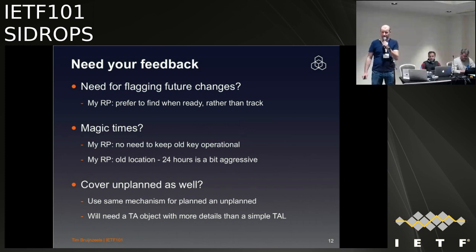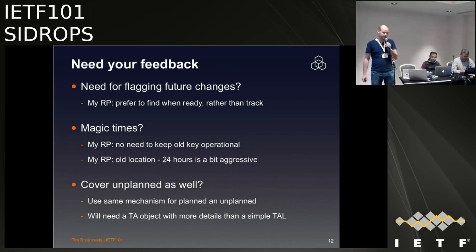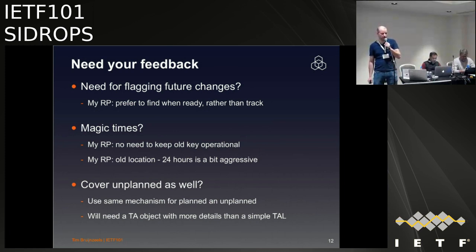Future changes: do people need unplanned roll coverage? Do people see a use case? From a relying party implementation perspective, it seems easier to just deal with it when it's ready and not keep track of future actions. What times should we use? And importantly — should we cover unplanned key rolls? Is the use case strong enough to warrant potentially more complicated ways of doing this?